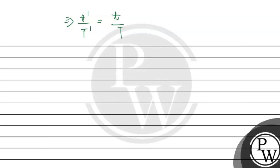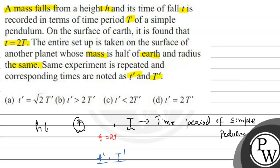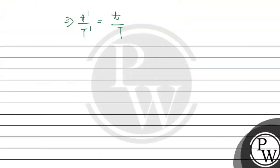So small t by capital T equals small t' by capital T'. Since small t equals 2T, we get 2T per T equals small t' per capital T', which implies small t' divided by capital T' equals 2. Therefore, small t' equals 2 times capital T'. This is the correct answer.